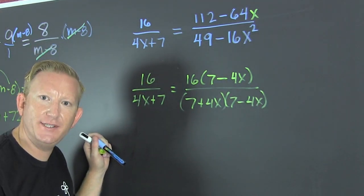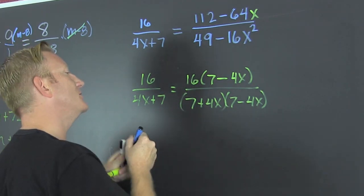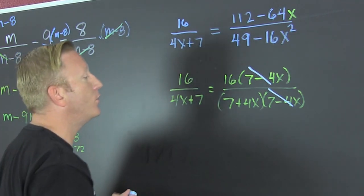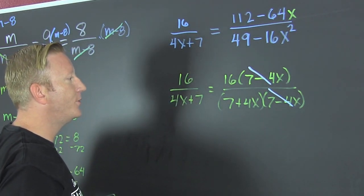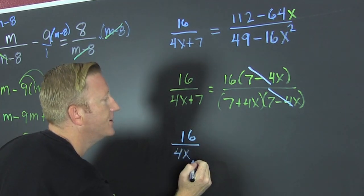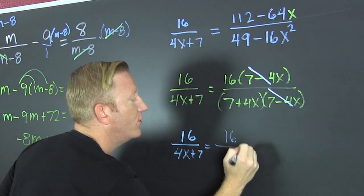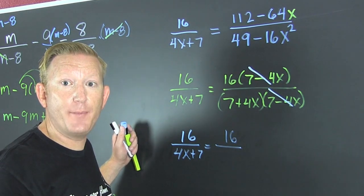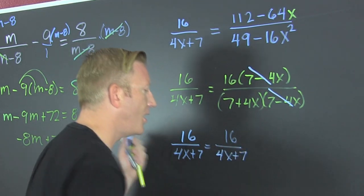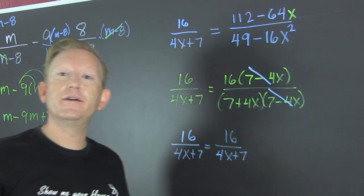What's next? I deduce. We can reduce. And we do. Because these are common factors and it's multiplication. I can. Look at this. 16 over 4x plus 7 is equal to 16 over... Now I want to use the commutative property of addition. And when I do that, I get a 4x plus 7. Are those the same? They are the same.